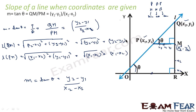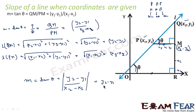Since we can write x1 − x2 or x2 − x1 (they differ only in sign and we take mod), and here x2 is greater than x1 and y2 is greater than y1, both numerator and denominator are positive. So tan θ = (y2 − y1) / (x2 − x1), which is the slope formula.